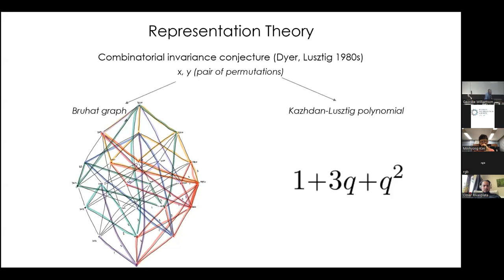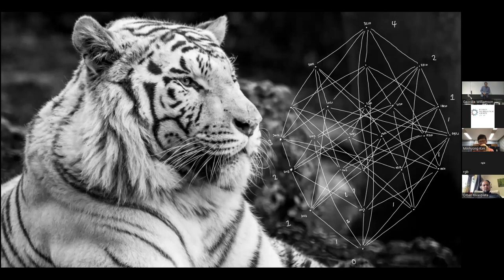So there's a conjecture in representation theory called the combinatorial invariance conjecture, which is over 40 years old, which is the statement that to a pair of permutations, whatever that is, so we can firstly associate a Kazhdan-Lusztig polynomial. So that's this thing on the right hand side. But we can also associate a much more kind of, it's more complicated object, but it's much more elementary. It's kind of very directly related to x and y. And that's this Bruhat graph. So you have something that's very directly related to x and y, but it's complicated. And then you have something that's very subtly related to x and y as some kind of very fundamental measurement of x and y. So if you want an analogy, the Bruhat graph is a little bit like the image of the tiger and the Kazhdan-Lusztig polynomial is like the judgment, you know, it is a tiger, it has whiskers, etc.